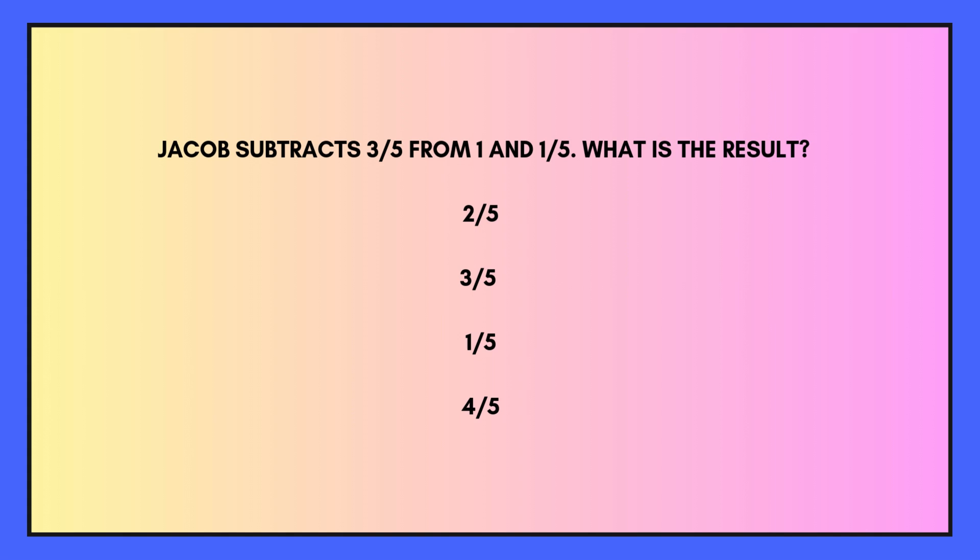Jacob subtracts 3 fifths from 1 and 1 fifth. What is the result? Our options are 2 fifths, 3 fifths, 1 fifth, or 4 fifths. Pause the video if you need a moment to work it out.